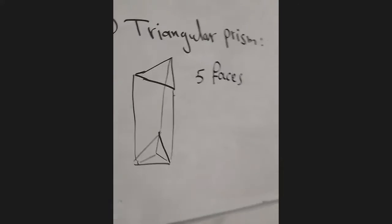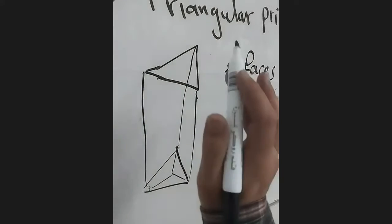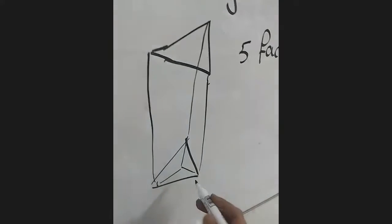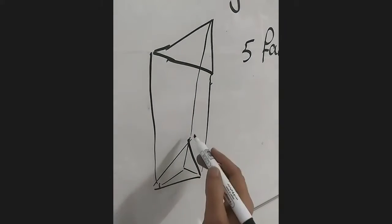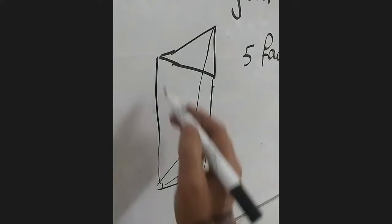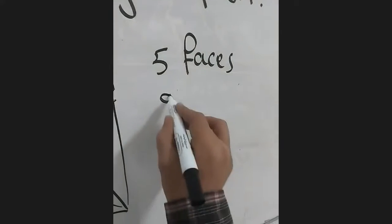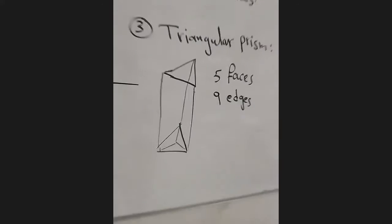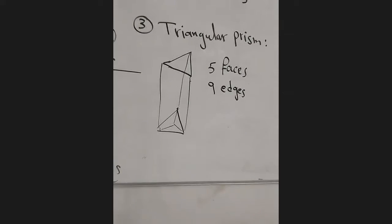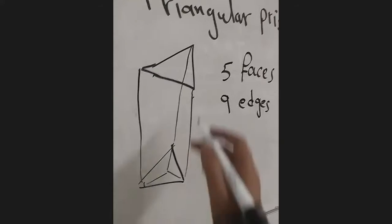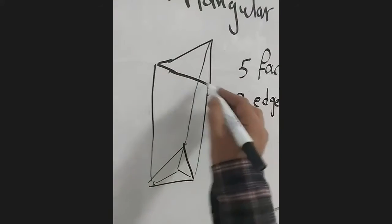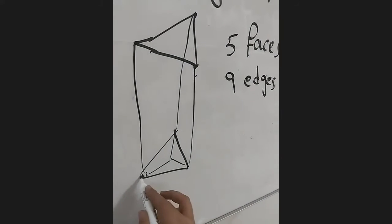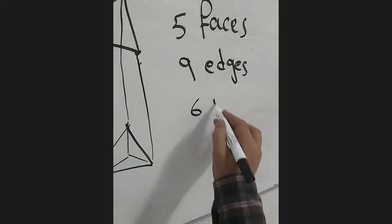How many edges does the triangular prism have? Let's count the line segments: one, two, three, four, five, six, seven, eight, nine. So we have nine edges. And how many vertices? Let's count: one, two, three, four, five, six. Six vertices.